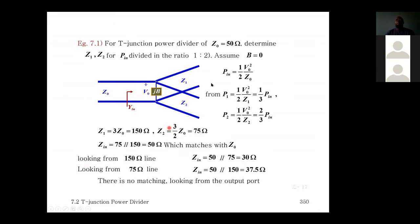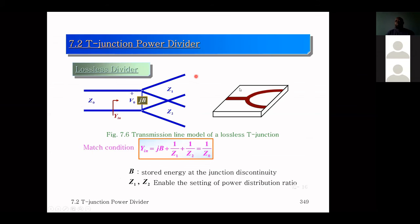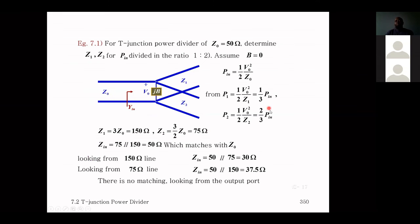Looking from the 150 Ω line, Z_in is 50 ∥ 75 = 30 Ω — not matched. From the 75 Ω line, Z_in is 150 ∥ 50 — also not matched. So matching exists only from port one. In the microstrip implementation, for a 1:2 power split, the line impedances are Z1 = 150 Ω and Z2 = 75 Ω with the input at Z0.